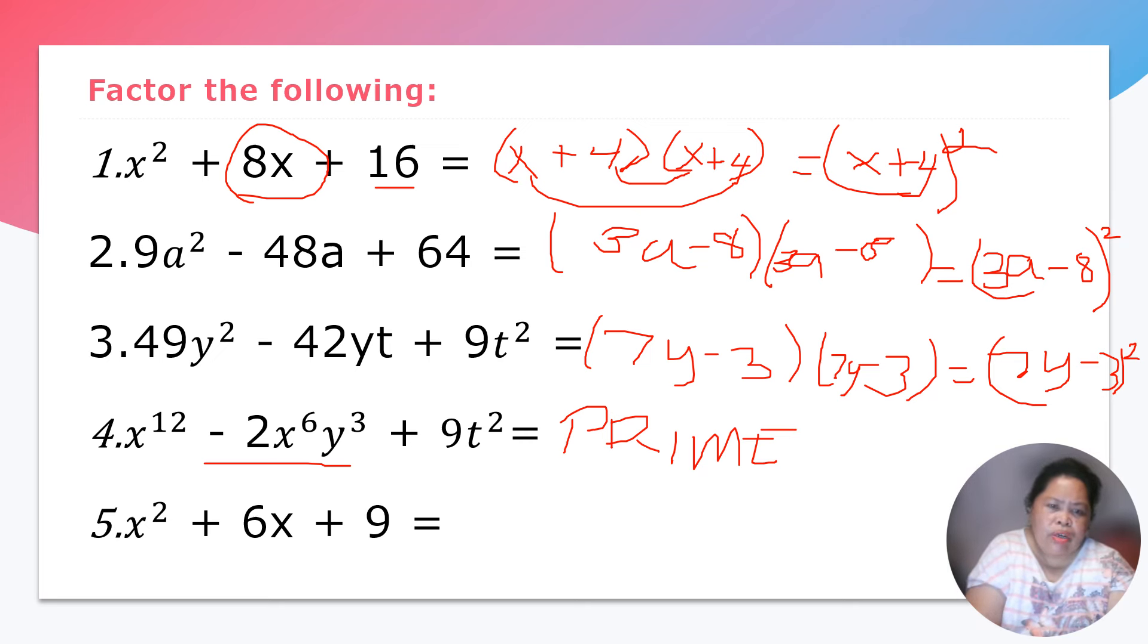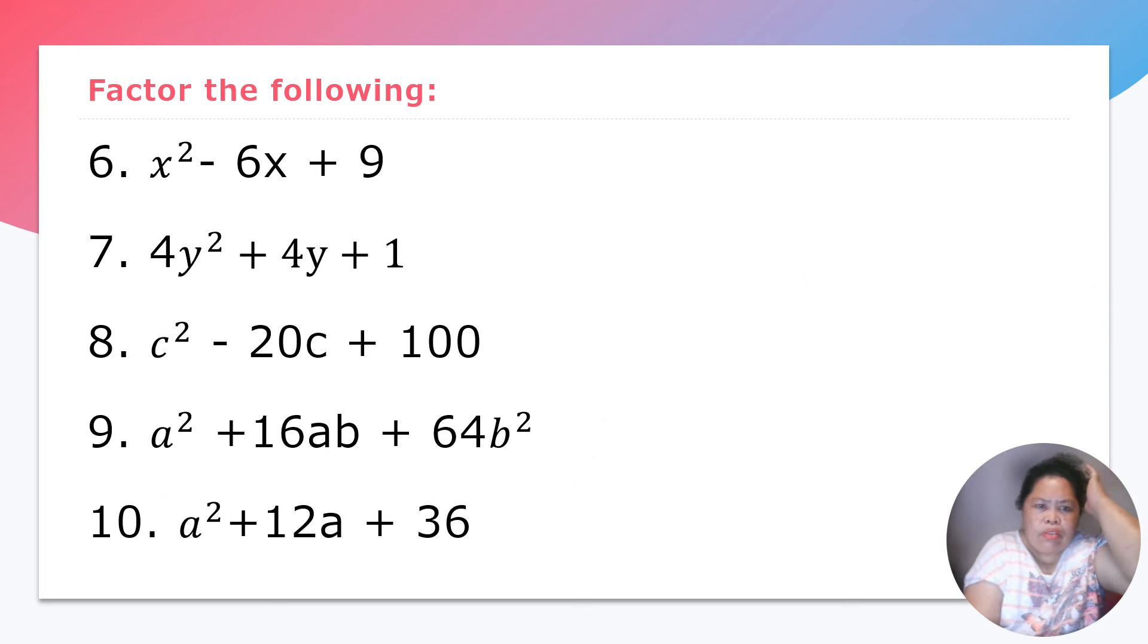What about number 5? Let's try. So we have here 5x squared plus 6x plus 9. So this one is perfect square. Because you have to look first if the given is the perfect square. And also you have to consider the middle term.